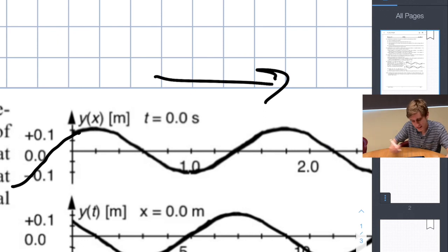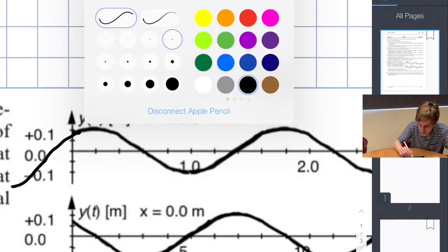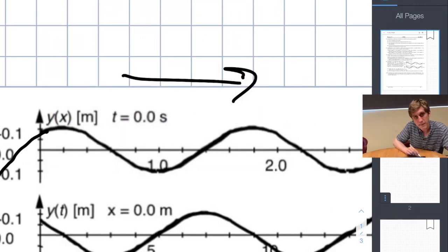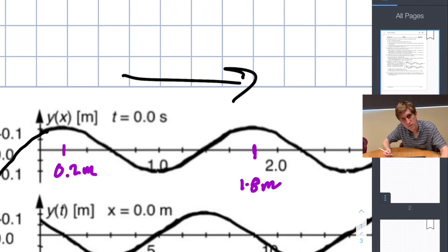We'll do the same exercise except instead of using a trough I'll use a peak. Each of the tick marks on this graph represents two-tenths of a meter. The first peak occurs right here at 0.2 meters. The next peak appears right here, 1.8 meters to the right of the buoy. The wavelength is just the distance from one crest to the next crest, in this case 1.6 meters.